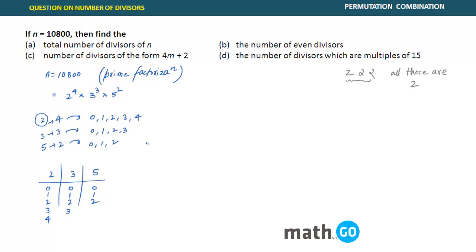So now you want your bag to have these many options available. How many total options for 2? Five. How many total options for 3? Four. How many total options for 5? Three. So the net answer for part A — that is how many total divisors are there — is 5 into 4 into 3, which equals 60.